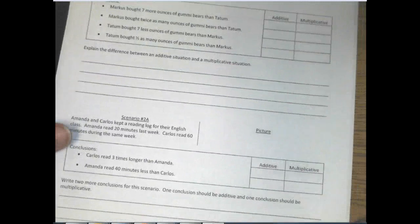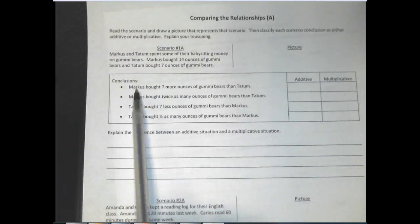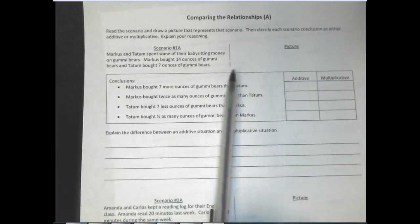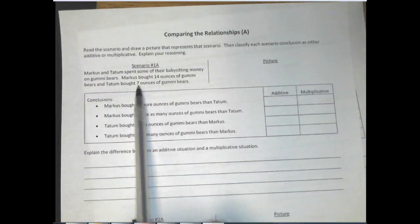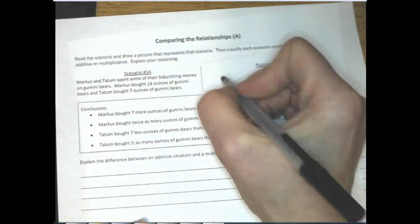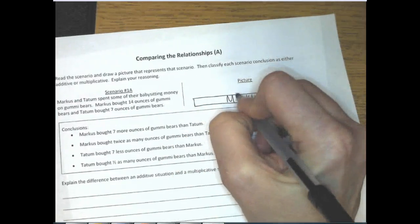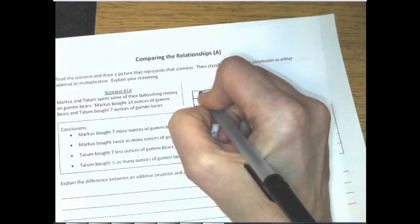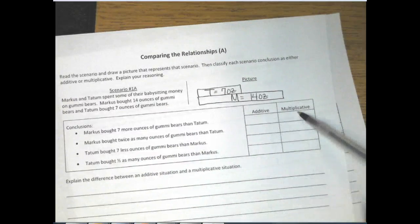This was homework. You're going to look at the scenario, read the statement that goes with it, and say whether it's an additive statement or a multiplicative statement. Marcus and Tatum spent some of their babysitting money on gummy bears. Marcus bought 14 ounces and Tatum bought 7 ounces. Representing it like a Cuisinaire rod, this is Marcus with his 14 ounces, and Tatum would be about half of that — she only has 7 ounces.